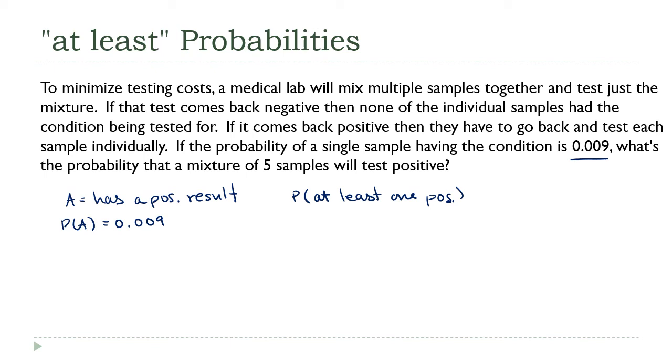The complement of that is no positives. Probability of at least one positive plus probability of no positives has to equal one. That's our complement rule. Probability of no positives. No positives is the same as all negatives. This is the probability at least one positive plus the probability all negative.